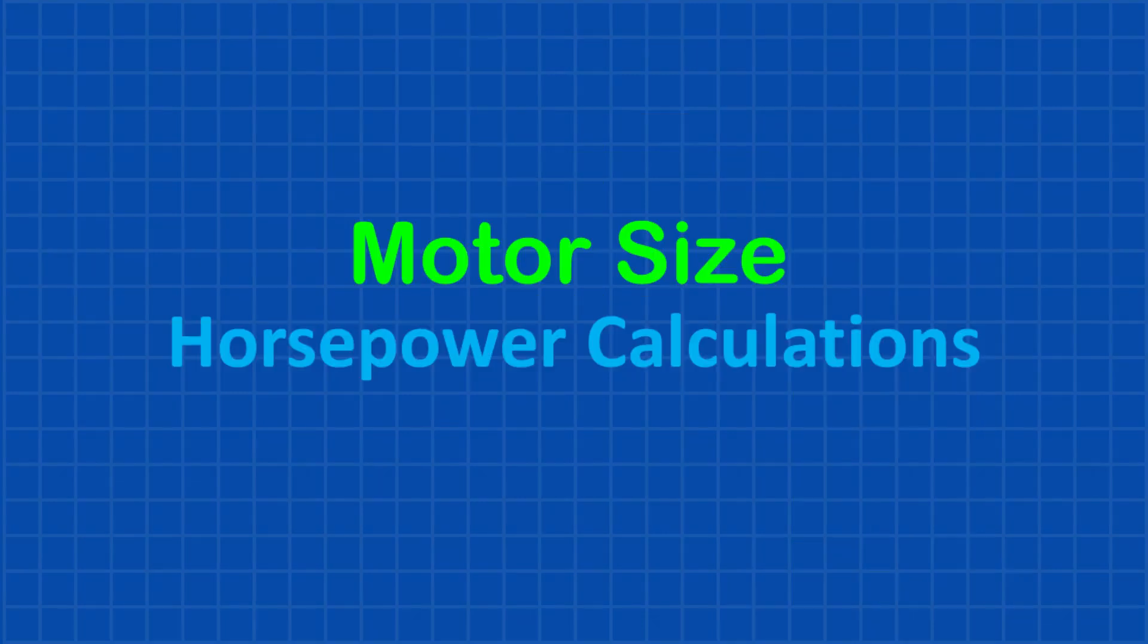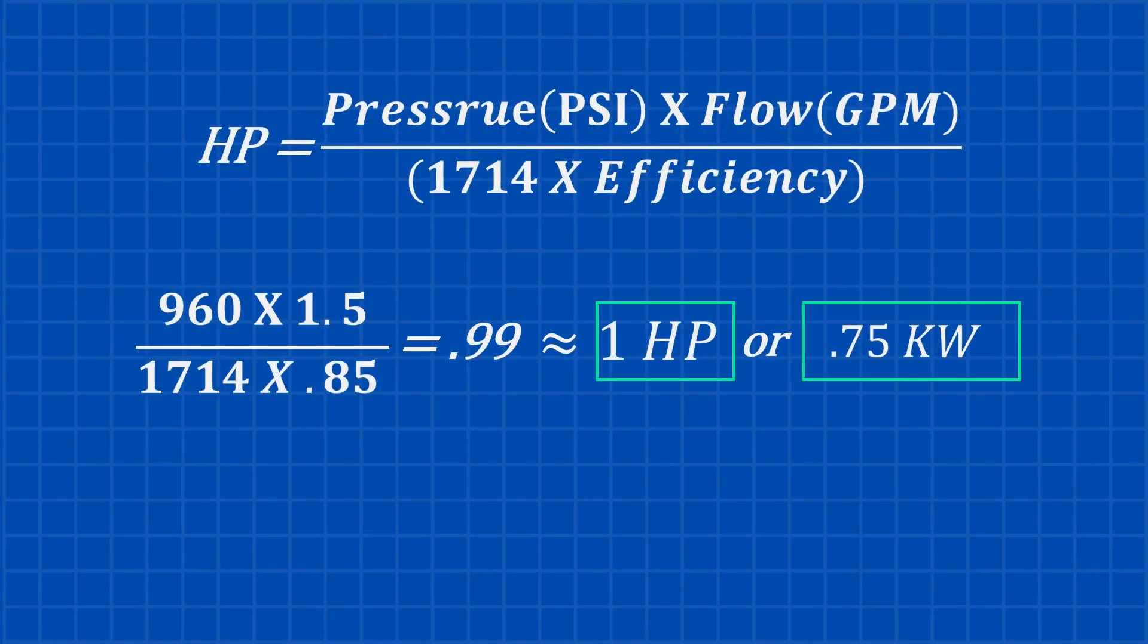Now let's figure out what horsepower we need. To calculate the horsepower, we use a simple formula. Horsepower equals pressure in psi, multiplied by flow in GPM, divided by 1714, then multiplied by efficiency. Most systems have an efficiency of around 85%. For this pump, the pressure is 960 psi, and the flow rate is 1.5 GPM. Plugging those values into the formula, the required horsepower comes out to about 1 horsepower, or 0.75 kW.